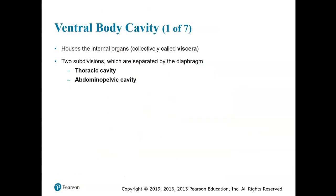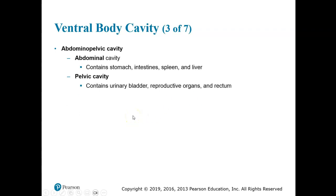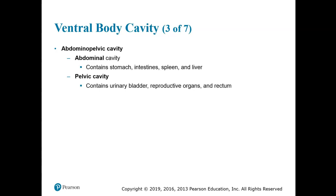In picture B, there is a pericardial cavity which encloses the heart, and pleural cavities enclose the lungs. The mediastinum is everything in the center between the lungs and includes the pericardial cavity. The thoracic cavity contains two pleural cavities because there are two lungs. The mediastinum also contains other organs such as the esophagus and the trachea. The pericardial cavity encloses the heart. The abdominal cavity contains the stomach, intestines, spleen, and liver. The pelvic cavity contains the urinary bladder, the reproductive organs, and the rectum.